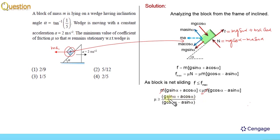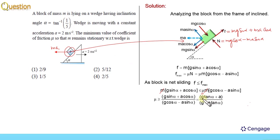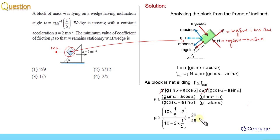Now we can substitute the value of tan α which is 1/5, g equals 10 m/s², and a equals 2 m/s². After substituting the values, we get the result as 20 divided by 48, which simplifies to 5/12. This means option number 2 is the correct answer.